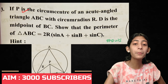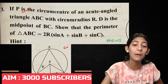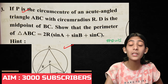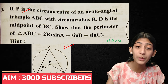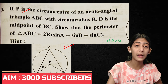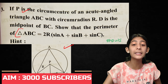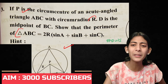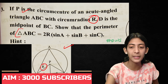Third question: If P is the circumcentre of an acute triangle ABC with circumradius R, and D is the midpoint of BC, show that the area of triangle ABC is equal to 2R(sin A + sin B + sin C). You can directly place R in the formula.